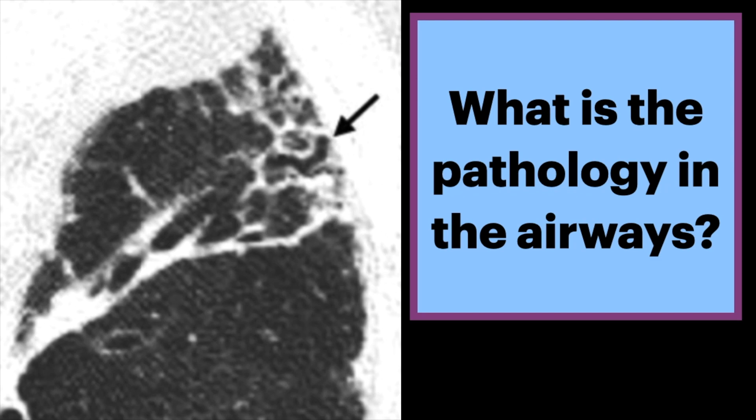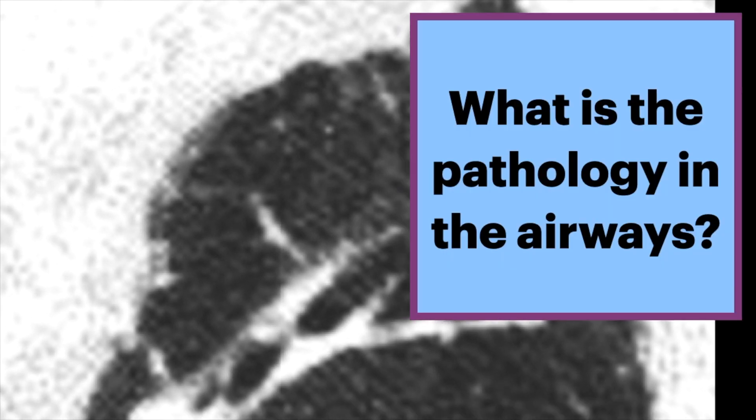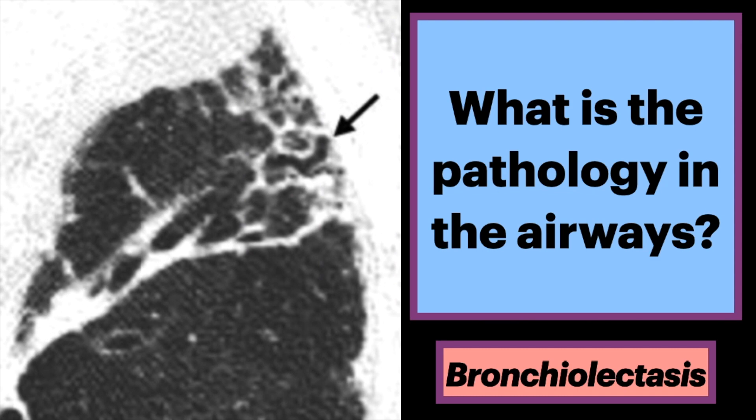What is the pathology in these airways? On this coronal CT of the chest, we see dilated bronchioles appearing as small cystic tubular airspaces in the periphery of the lung. The answer is bronchiolectasis.